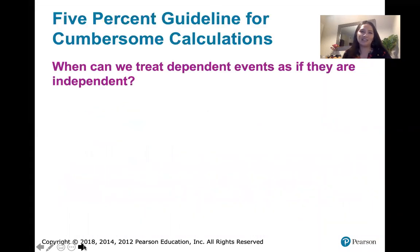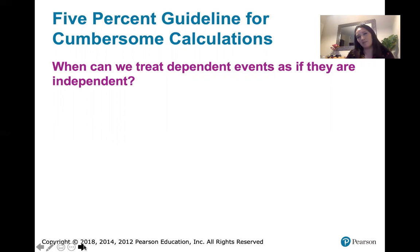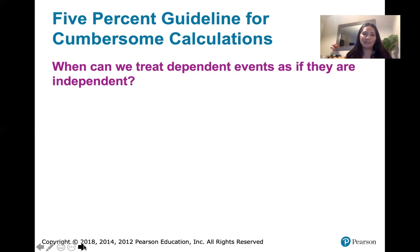Remember what that 5% guideline does for us — it answers this question: when can we treat dependent events as if they're independent? Whenever you have dependent events, the probability of one event depends on the outcomes that came before it. That makes the next calculation more complex than the first, and if you have another event after that which is dependent on one of the first two, that will change the next probability calculation as well. So it can be cumbersome if you have dependent events.